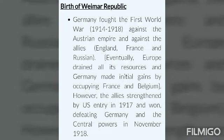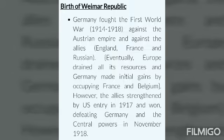We proceed to our first topic — the Birth of the Weimar Republic. Germany was a powerful empire in the early years of the 20th century. It fought the First World War, from 1914 to 1918, alongside the Austrian Empire and against the Allies — England, France and Russia. Germany made initial gains by occupying France and Belgium. The Allies, strengthened by the US entry in 1917, defeated Germany and the central powers in November 1918. The defeat of Imperial Germany and the resignation of the Emperor gave an opportunity to parliamentary parties to recast German polity.